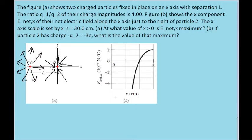This graph on the right here shows the x component of that net electric field, depending on where we are on the x-axis, at least positively, since the axis starts at zero and ends at x_s, which the problem gives us. It tells us the axis scale is set so that the maximum here is 30 centimeters.